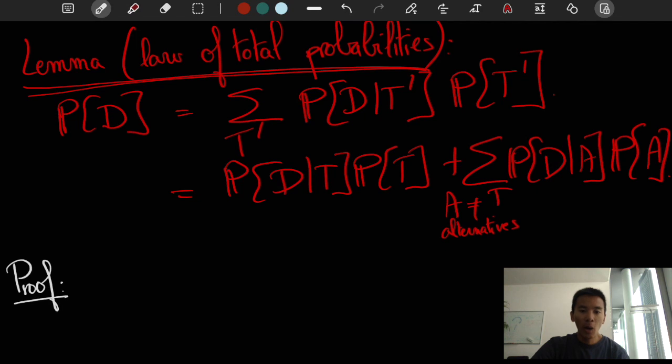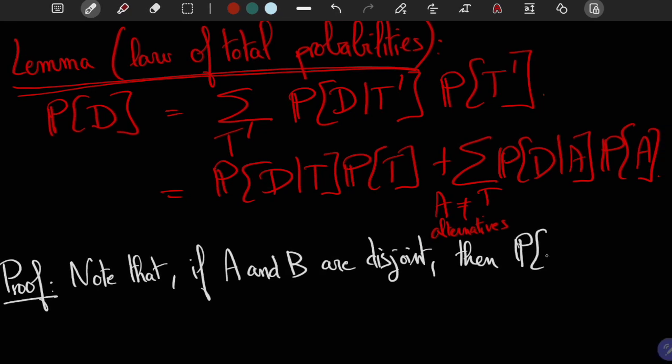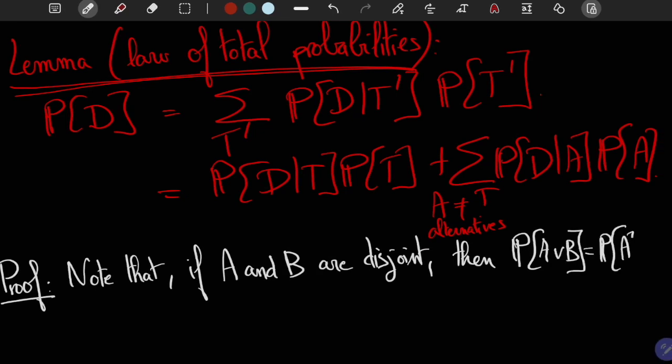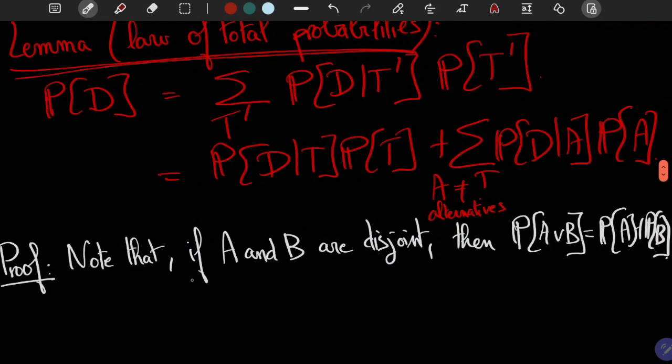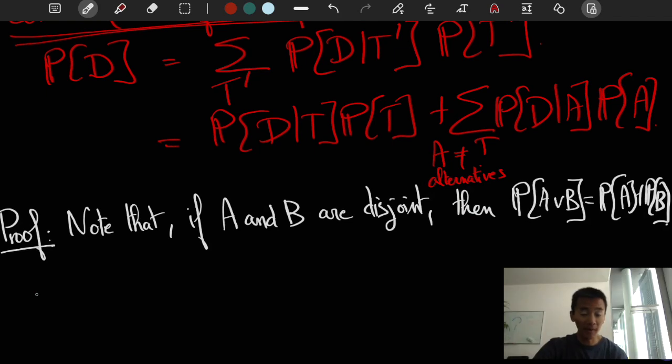Now, to prove this lemma, we are going to start with an even more basic remark, namely that if A and B are two disjoint sets, that is, A and B cannot occur simultaneously, then the probability of A or B is equal to the probability of A plus the probability of B. Now, note that I've said or for the symbol union, but in a sense they can be interpreted equivalently. Now, you may want to ask why this is true. Well, this is a fundamental axiom of probability theory.